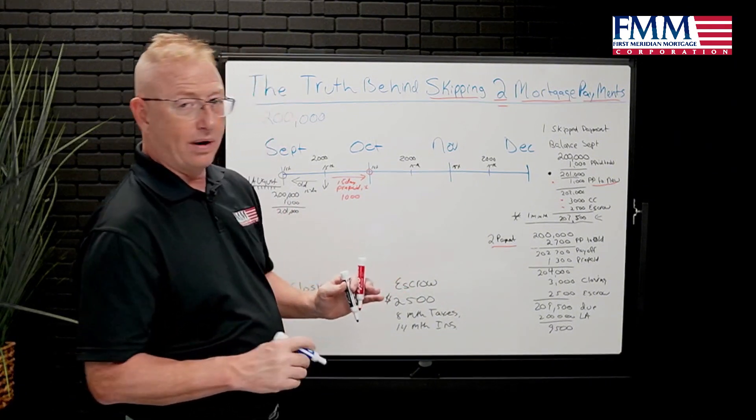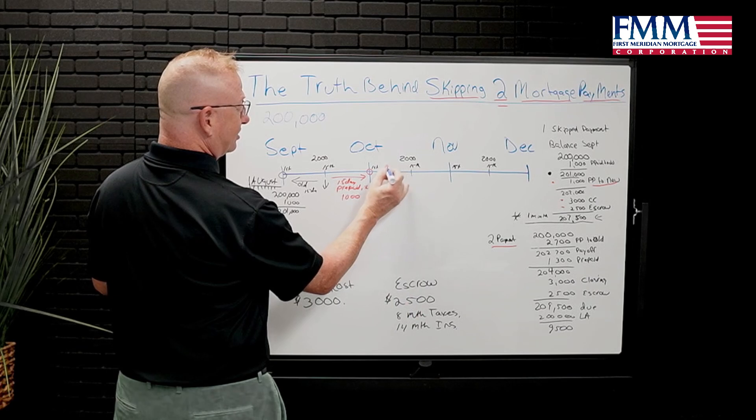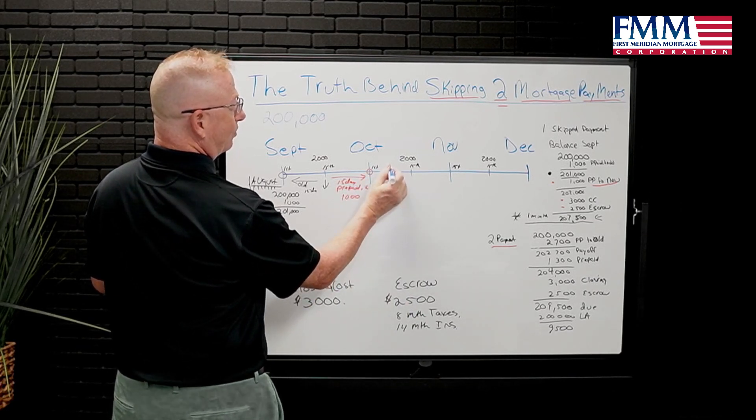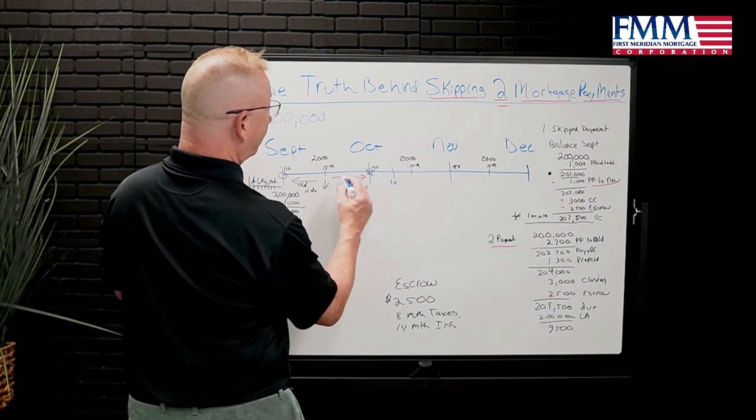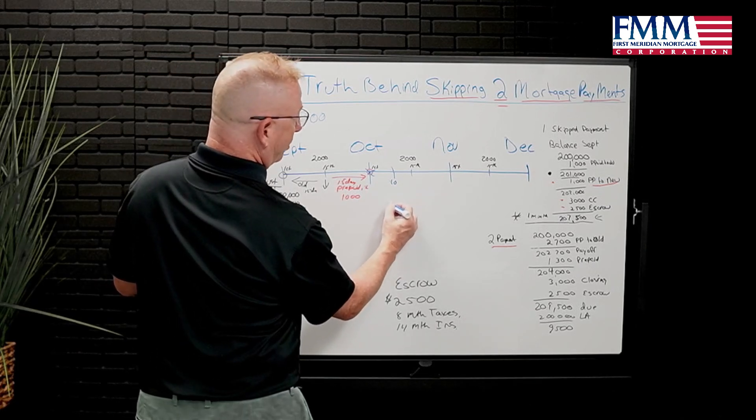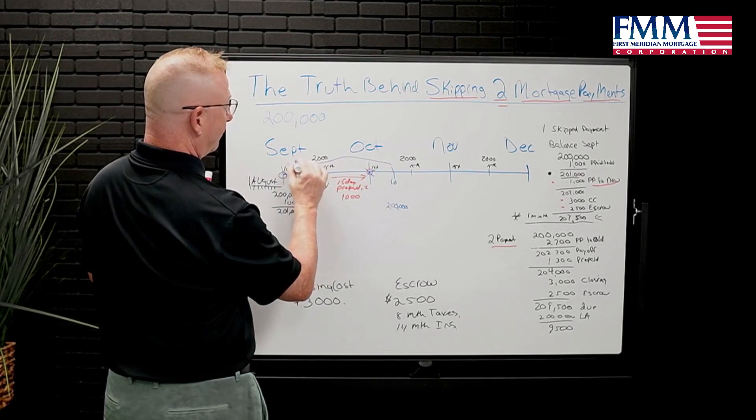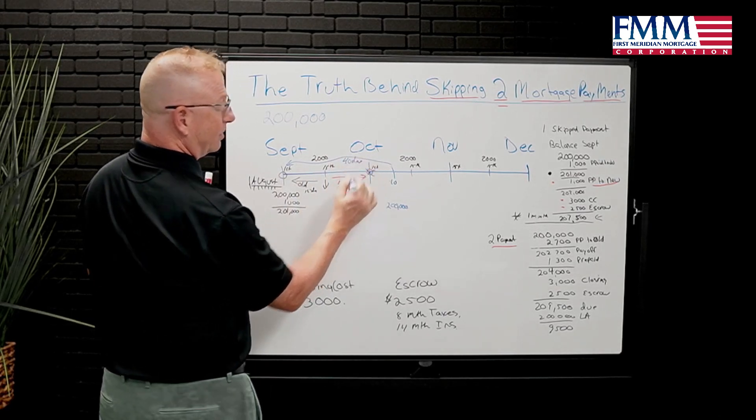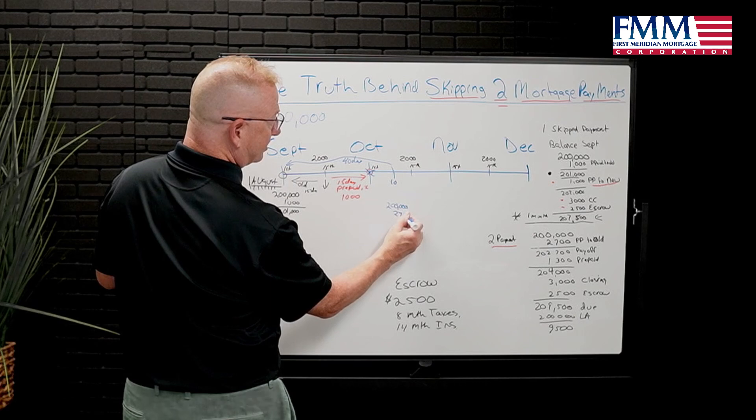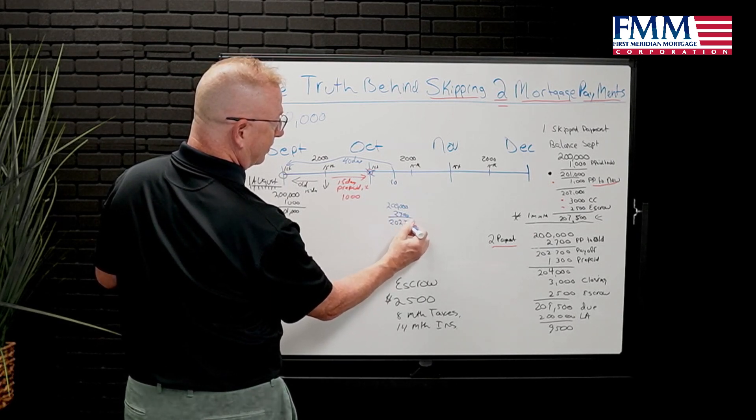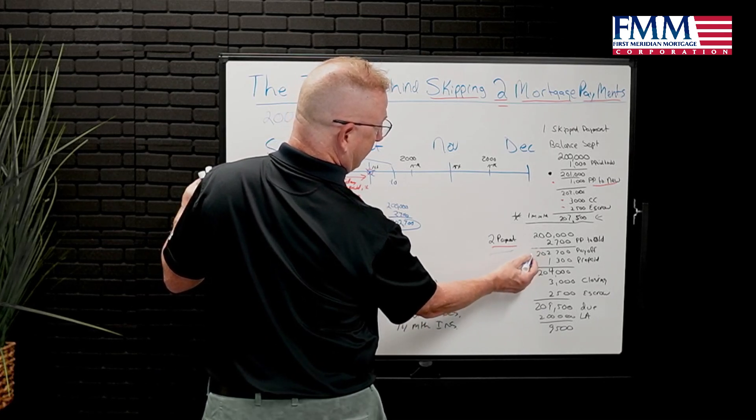So what about the two-month scenario? That gets a little bit different. So how they do that is instead of you mailing out this payment, they have you close on the 10th, and they tell you don't make that payment. So when you don't make that payment, and the first payment you made here, you owe $200,000 principal. Now you owe 40 days of interest to the old lender, 30 plus 10. So we're going to call that $2,700. So in this scenario, $202,700 is your payoff. Two-payment scenario.